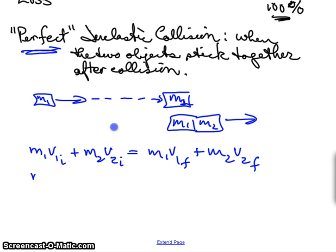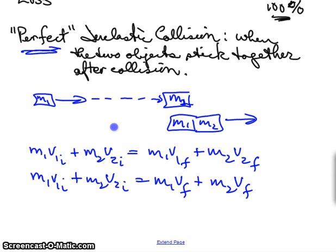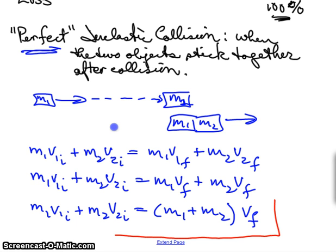So we can write this as M1V1 initial plus M2V2 initial equals M1V final, right? It's the same as the other one plus M2V final. Well, now, what can I do with that equation? If you said factor out the masses, then you were correct. We will factor out the masses, and we get M1 plus M2V final. And this is the equation for a perfect inelastic collision.